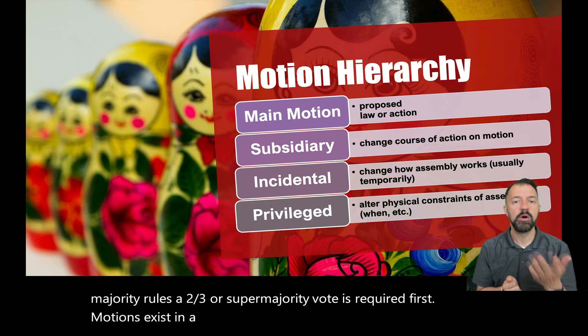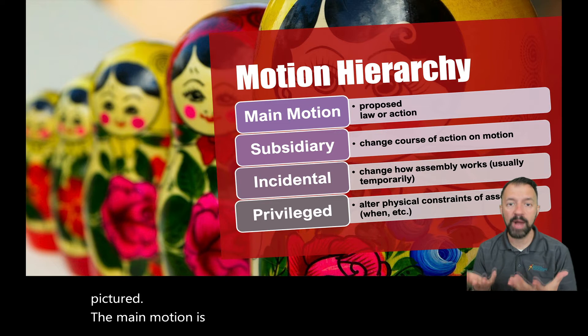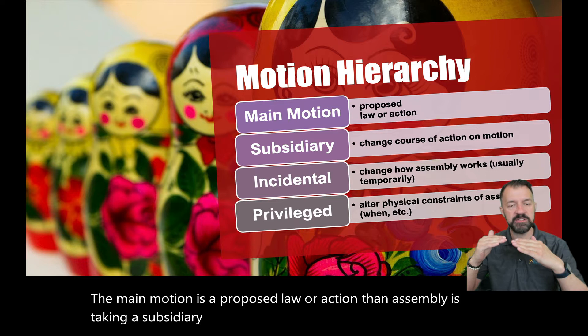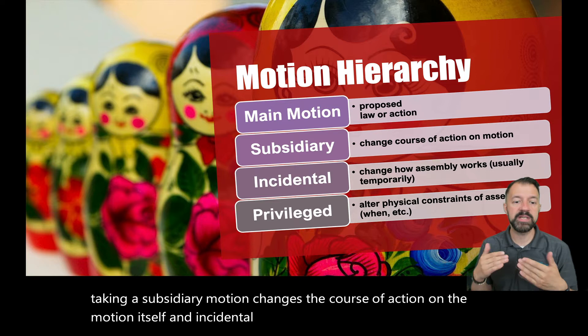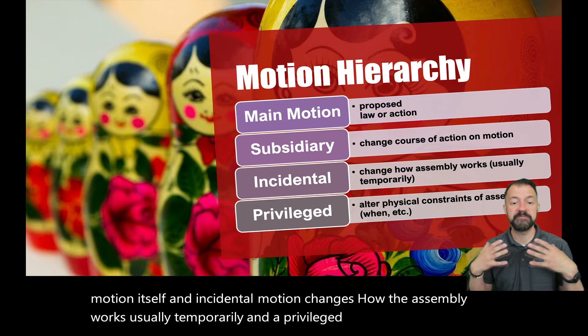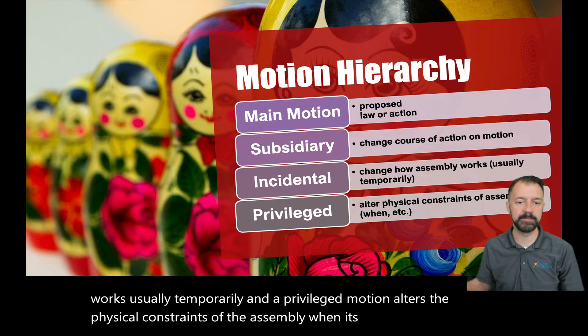Motions exist in a hierarchy — kind of like Russian nesting dolls. The main motion is the proposed law or action that an assembly is taking. A subsidiary motion changes the course of action on the motion itself. An incidental motion changes how the assembly works, usually temporarily, and a privileged motion alters the physical constraints of the assembly — when it's meeting or where it's meeting.